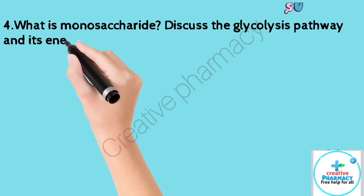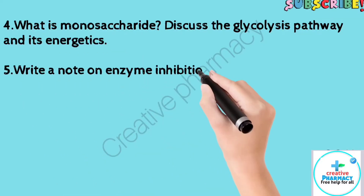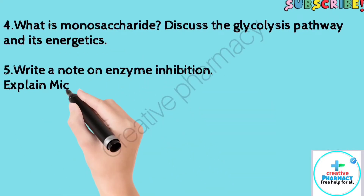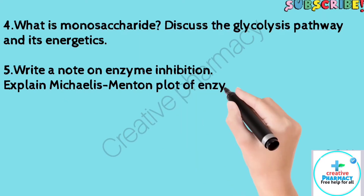Question 5: Write a note on enzyme inhibition. Explain the Michaelis-Menten plot of enzyme kinetics.